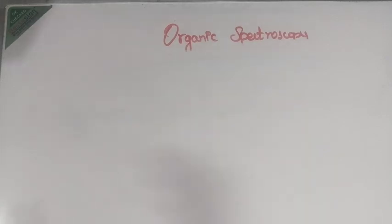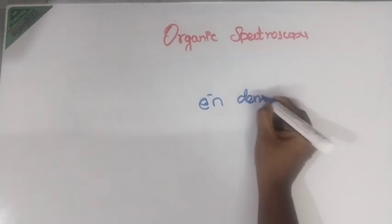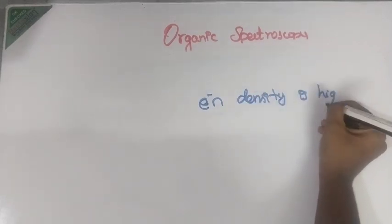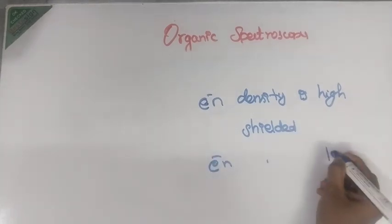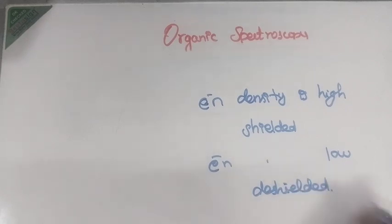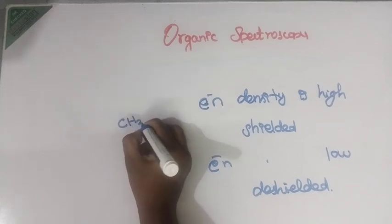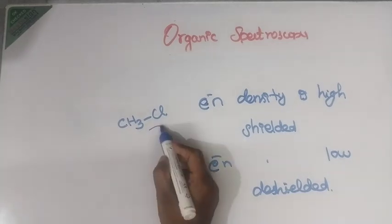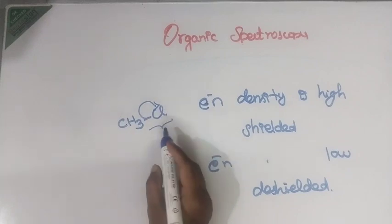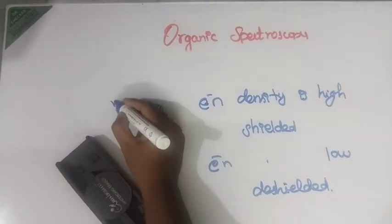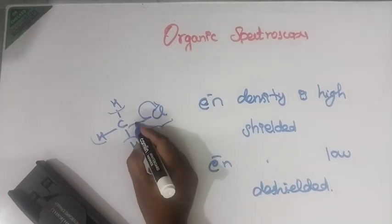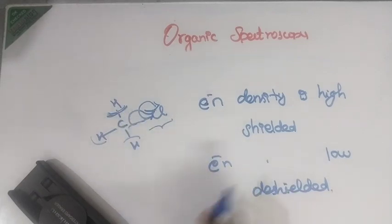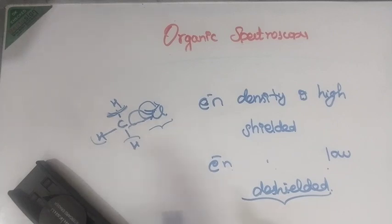One thing you must know: if the electron density is high, that is known as shielded. If electron density is low, that particular compound will be known as deshielded. For example, consider CH3 attached to a chlorine group. Chlorine is an electron withdrawing group — it will tend to pull electrons towards itself. As a result, the electron density around this proton will be low, so it is deshielded.